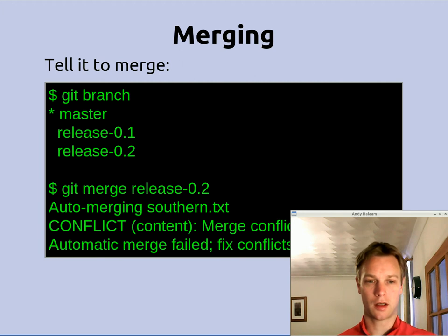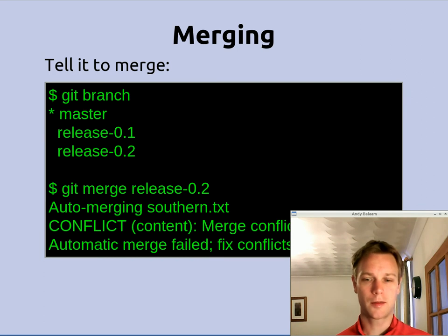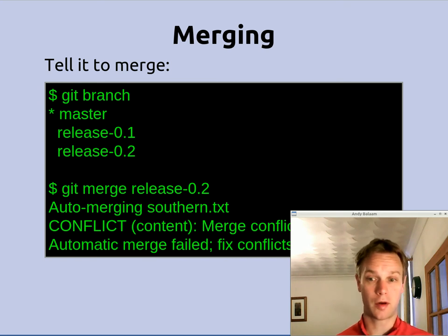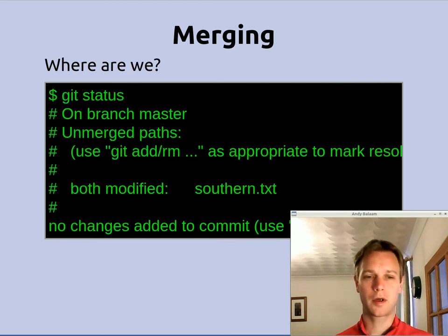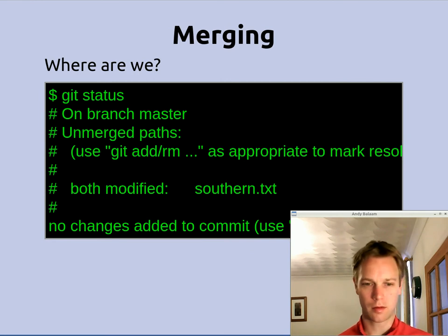To tell it to merge, we make sure we check what branch we are on — git branch — and we find out that we are on master, which is the right place. So if we want to pull in the changes from release 0.2 into master we make sure we are on master and then say git merge release 0.2, which means take all the changes that happened in release 0.2 and also make them available in master. What we get is an error message saying there is a conflict. We are now in a situation where we are part way through a merge. A merge is just a commit, except it has two previous states instead of just one. When a merge doesn't succeed, that commit has not been committed yet — we are part way through editing a commit. If we do a git status it says 'unmerged paths', and it tells us that southern.txt was modified in both previous commits.